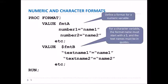There's a difference between numeric and character formats. In a numeric format, you assign a number to a name — the name is in quotes but the number is not. When you have a character format, you have to put a dollar sign in front of the name. Notice the second example: dollar sign FMT_B — that's a character format. In this case, both values on either side of the equal sign are in quotes, so the text name is the original value and the name you're assigning is the new value.